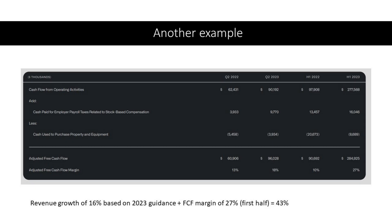Here's another example — some of you will recognize this company. Again, this shows how you calculate free cash flow from net operating cash flows. They make some adjustments, and at the bottom right you can see for the first half of this year an adjusted free cash flow margin of 27%. They're guiding towards revenue growth of 16% this year. Adding 16 plus 27, they're actually hitting the Rule of 40 — over it at 43. But note these numbers change over time, so it's not just a matter of hitting it once; you need to monitor this consistently.